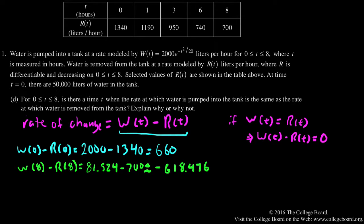And so here's the important thing now. We know that w of t minus r of t is differentiable, and therefore continuous.